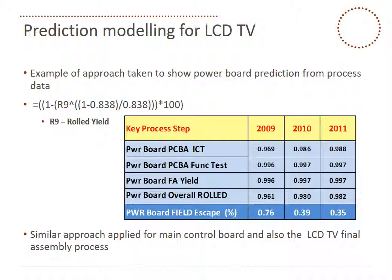For LCD TV, a lot of data fitting was done with several clients. At the time I was working with the top three TV contract manufacturers in the world, and used a lot of data from different processes to develop the right model. R9 is effectively a rolled yield level, which is the correct way to look at yield — the total yield loss in the process. For example, on a power board where we do ICT test, functional testing, and then the power board gets tested again in final assembly, we have three yield levels that are recorded. We roll them — multiply them all together — to get a rolled yield. R9 goes into this with our data fit, and we predict the percentage power board field escape.